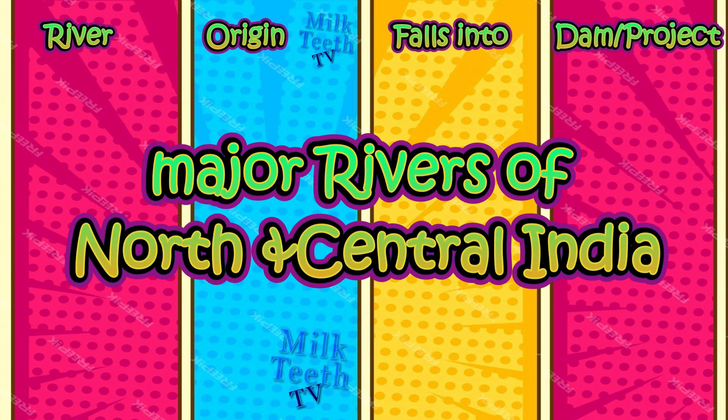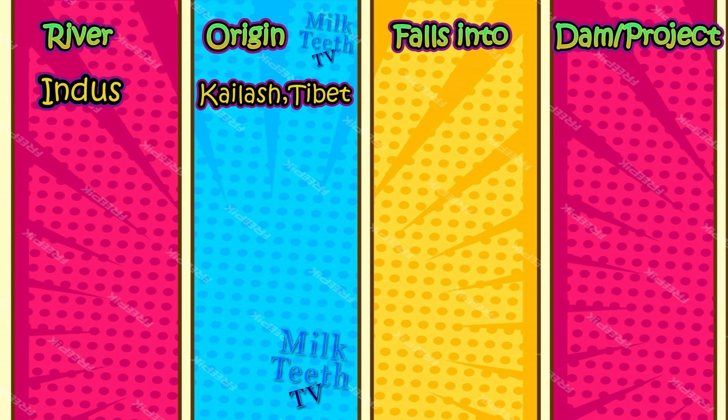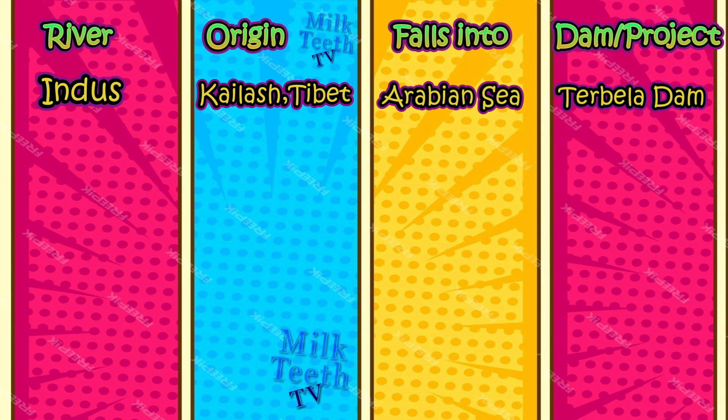Major rivers of North India and Central India. River Indus: it originates from the Kailash mountain range in Tibet, falls into the Arabian Sea, and the Tarbela Dam project is constructed upon it.